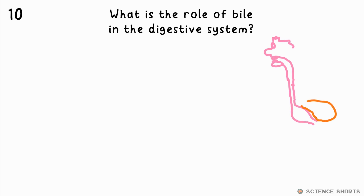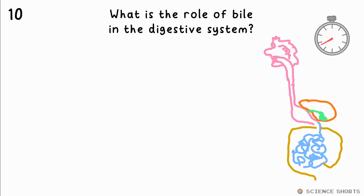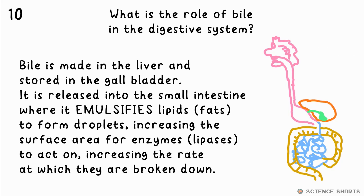Question 10. What is the role of bile in the digestive system? Bile is made by the liver and stored in the gallbladder. It then goes to the small intestine, where it emulsifies lipids, or fats, to form small droplets. This increases the surface area, increasing the rate at which they're broken down by enzymes — specifically lipases.